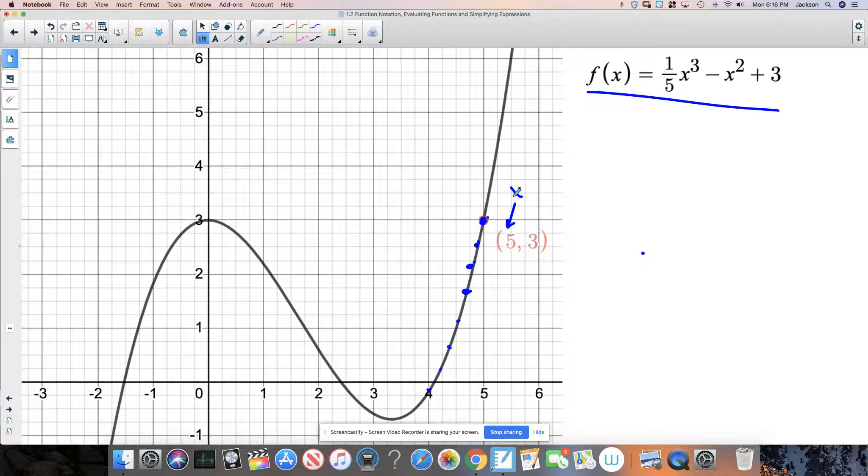So this value right here, this is our X. This value right here, this is our F of X, right? Now we want to call that Y because X and Y, that's the traditional way to look at it. And that's fine.